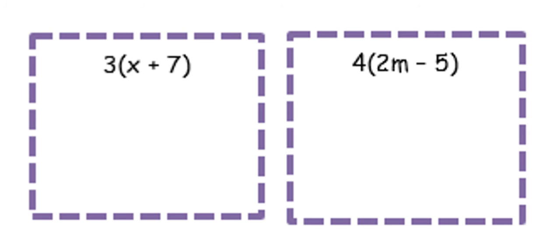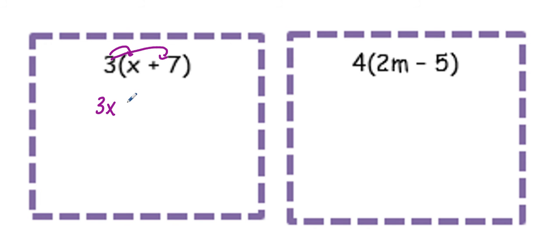So our first example, we have 3 times the quantity X plus 7. So 3 times X is 3X, and 3 times a positive 7 is a positive 21.